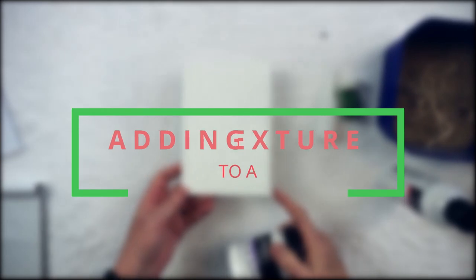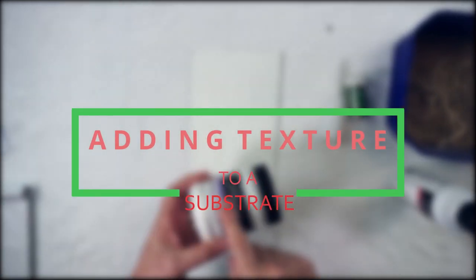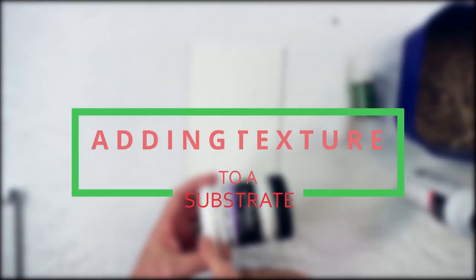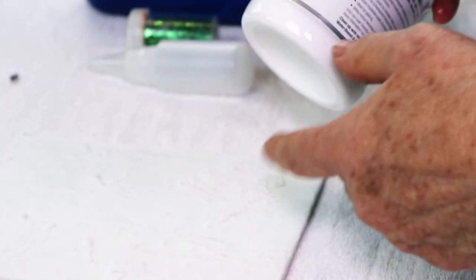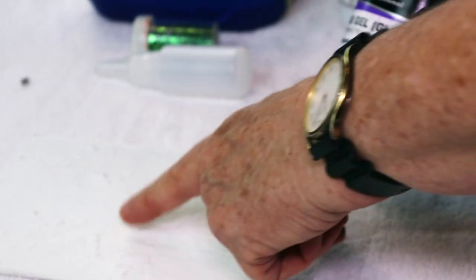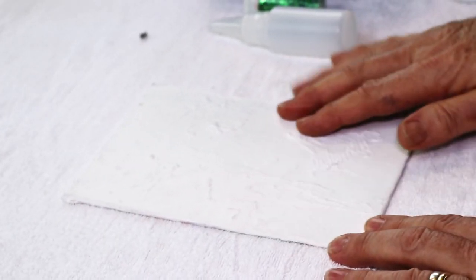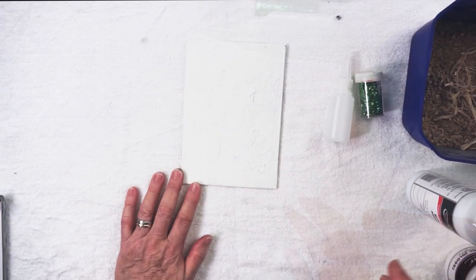To add texture to substrate, if you want a fairly high level of texture, you can put your gel gloss—either heavy, regular, or satin—down and impress that with sand or gravel.